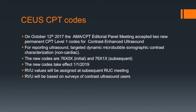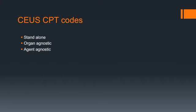RVU values for these codes are yet to be decided and will be assigned at the next Relative Value Update Committee meeting, based on surveys of contrast ultrasound users. The new codes are standalone codes, meaning they can be performed independent of other ultrasound codes. They can be used for any organ and are not limited to the liver, kidneys, or bladder, and can be used for any contrast agent, although at this time Lumison is the only FDA-approved agent for non-cardiac applications.